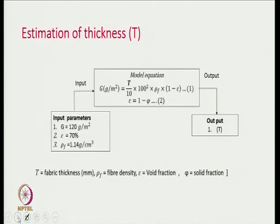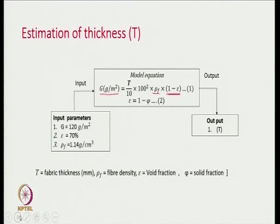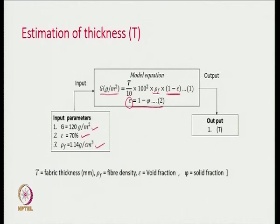When it comes to the estimation of thickness, the fabric basis weight is related to thickness, fiber density, and porosity. That equation is stated here, and the relationship between porosity and fiber packing density is also stated in another equation. We can make use of these two equations to find out what should be the thickness of the fabric. Input parameters are G — the basis weight — the porosity, and the density of the fiber. Fiber is given as nylon, so we write density 1.14.